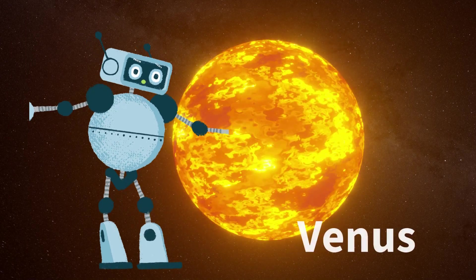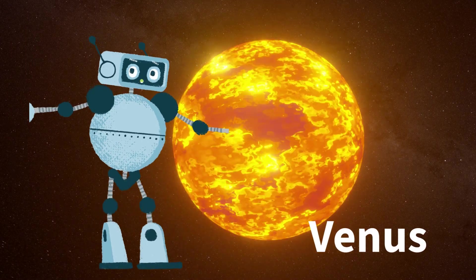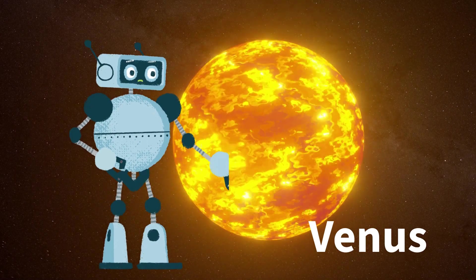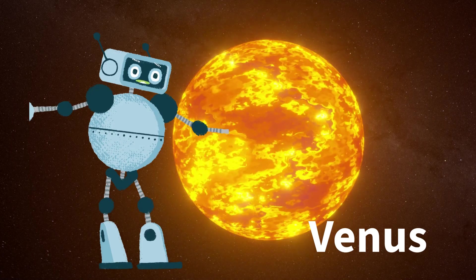Venus, a hot and shiny planet, is the second planet from the Sun, similar in size to Earth. Covered in thick clouds of sulfuric acid with a runaway greenhouse effect that makes it the hottest planet in our solar system, Venus has a dense atmosphere mainly composed of carbon dioxide.